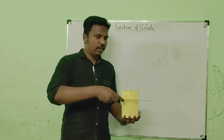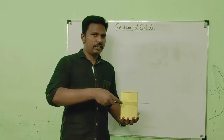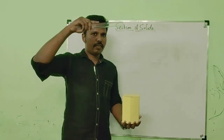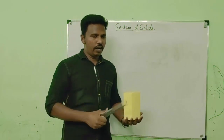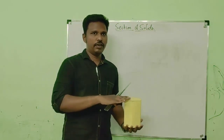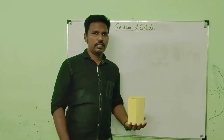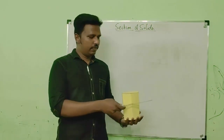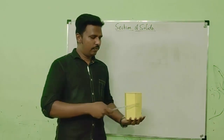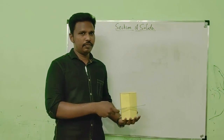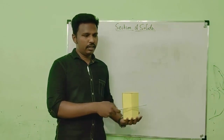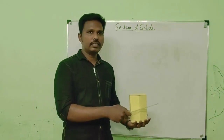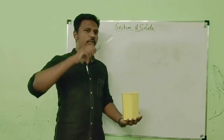If we cut the solid in this orientation, the section view will be visible only in the top view. In the front view we cannot see the sectional surface — the sectional view means the newly exposed surface. So if we see the solid from its front, we cannot see the sectional shape; we can see only the cutting plane in that view, and the section view is visible only in the top.